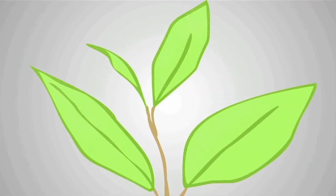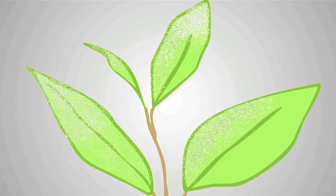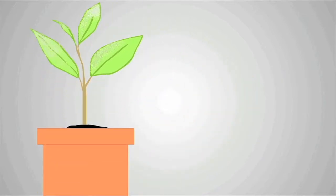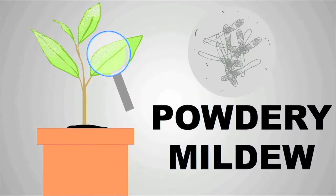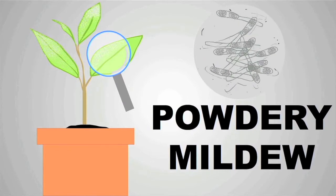Do your plants have a powdery white or gray residue growing on them? If so, your plants could be infected with powdery mildew. Powdery mildew is a fungal disease that attacks plants in the form of a powdery white residue on plant leaves and stems.